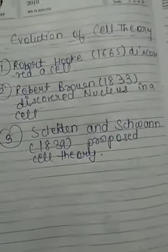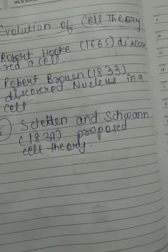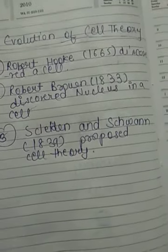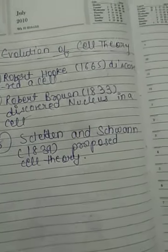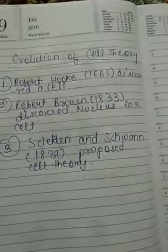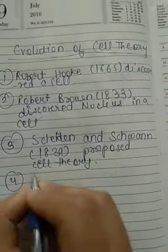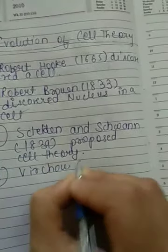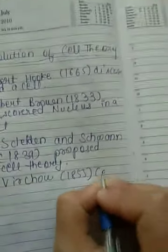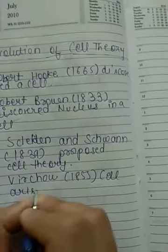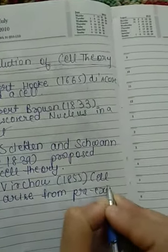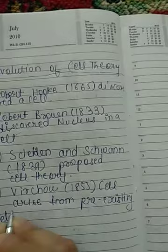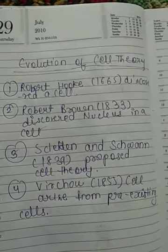The cell theory described a few key points regarding the cell and its properties. After a couple of years, in 1855, a scientist called Virchow gave some modifications to the cell theory, adding that cells arise from pre-existing cells — meaning new cells originate from already existing cells. These are some of the key developments in the evolution of cell theory.